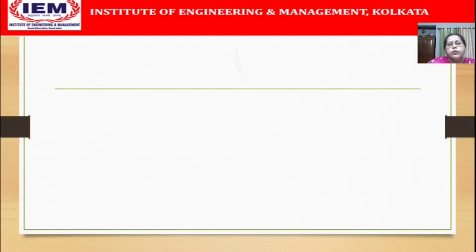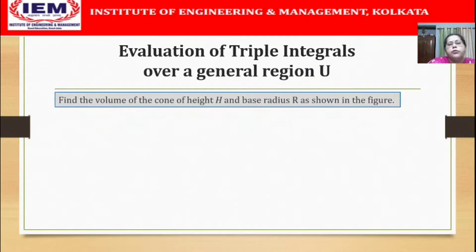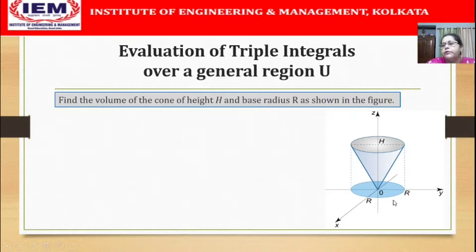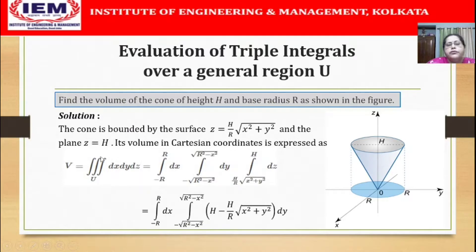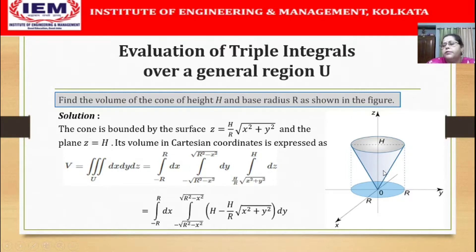Let us find the volume of a cone of height h and base radius r. The volume is given by the triple integral of dx dy dz. The projection of the cone on the xy plane is a circle of radius r. Treating this as a type 1 region, the lower surface is the cone itself with equation z = (h/r)√(x² + y²), and the upper surface is the plane z = h.